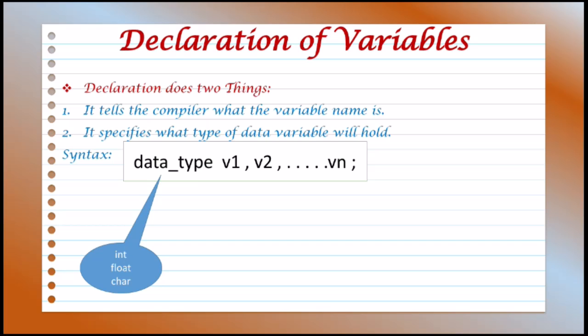Here, datatype is the type of data we want to give to the variable. It can be int, float, character, etc. v1, v2, up to vn are the names of the variables. If we are declaring more than one variable, they should be separated by commas.